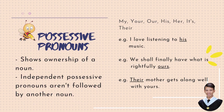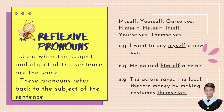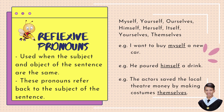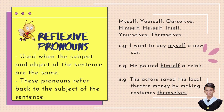The next one is reflexive pronouns. It is used when the subject and object of the sentence are the same. These pronouns refer back to the subject of the sentence. These are: myself, herself, ourselves, himself, itself, yourselves, and themselves. Example: I want to buy myself a new car. The pronoun refers back to the subject — I, myself.